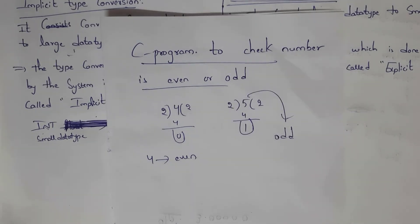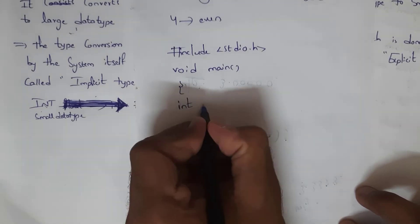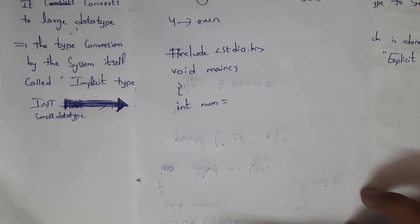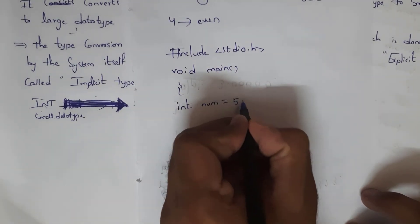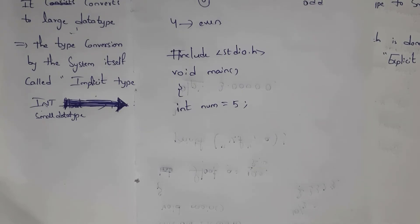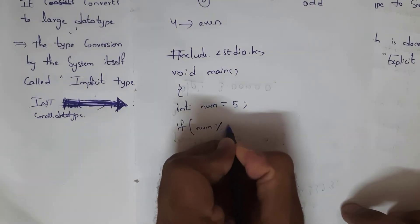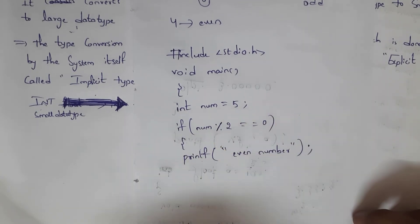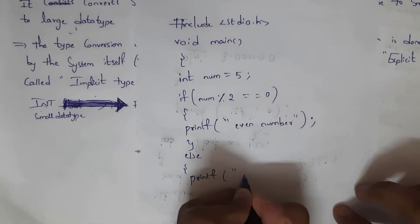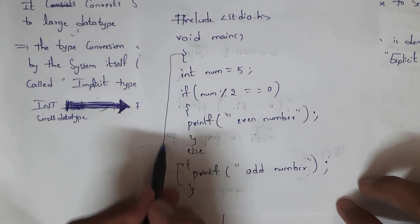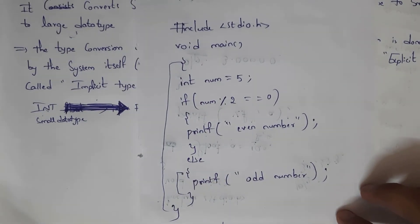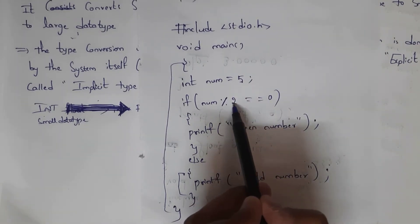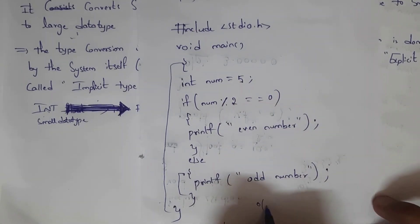I will write the C program to check whether a number is even or odd. I declared int number = 5. To check whether 5 is even or odd: if number % 2 == 0, then printf("even number"); else printf("odd number"). Here, 5 divided by 2 gives remainder 1, not 0, so 5 is an odd number. The output is: odd number.